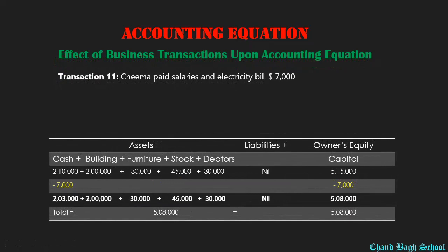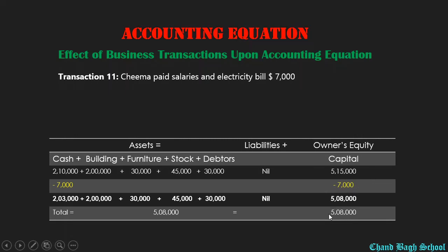Here is another business transaction: Mr. Chima paid salaries and electricity bill by $7,000. Mr. Chima نے salaries اور electricity bill $7,000 cash سے pay کی ہے، تو cash $7,000 reduce ہوئی ہے۔ $210,000 سے $7,000 reduce ہو کر $203,000 باقی بچا ہے۔ جب بھی expense create ہوتا ہے، وہ capital سے reduce کر دیا جاتا ہے — $7,000 capital سے minus ہوں گے تو balance $508,000 رہ جائے گا۔ Accounting equation کے دونوں sides $7,000 کے ساتھ reduce ہوئی ہیں۔